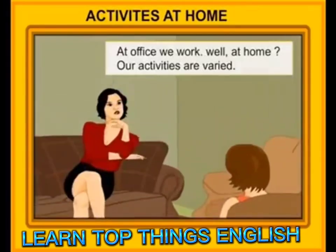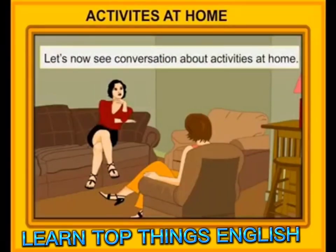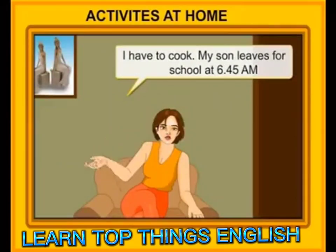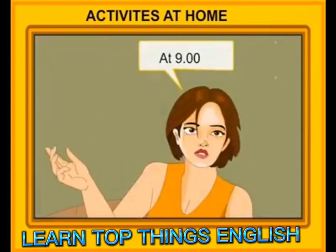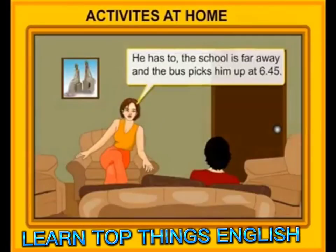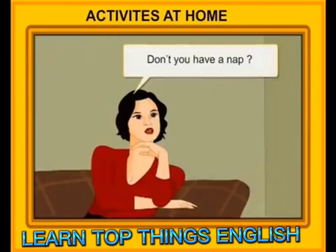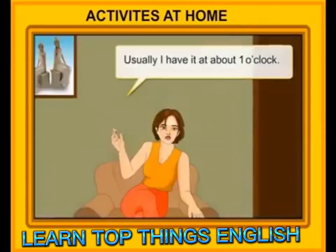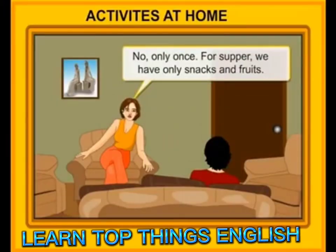Activities at home. At office we work, but at home our activities are varied. Normally, when do you get up? At five. Why do you get up so early? I have to cook. My son leaves for school at 6:45 a.m. At 6:45? When does his school start? At nine. Then why does he leave so early? The school is far away and the bus picks him up at 6:45. When does he return? By five. What do you do in the afternoons? I read books or watch TV. Don't you have a nap? No, I don't — if I do, I get a headache. When do you have your lunch? Usually about one o'clock. Do you cook twice a day? No, only once. For supper, we have only snacks and fruits.